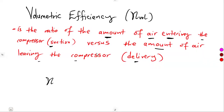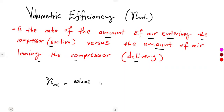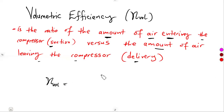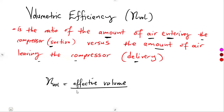The volumetric efficiency, which we can have in short — depending on the textbook, some just use V, but I'm going to use volume like V or L. So our volumetric efficiency in words can be given as the effective volume over the swept volume, which is our stroke volume.